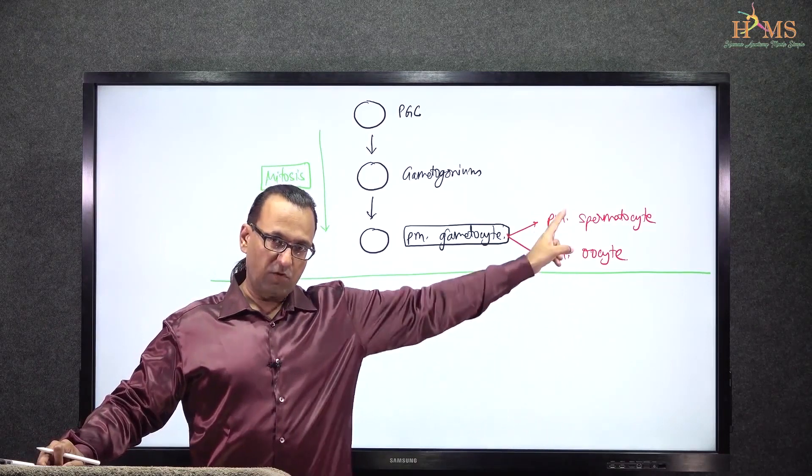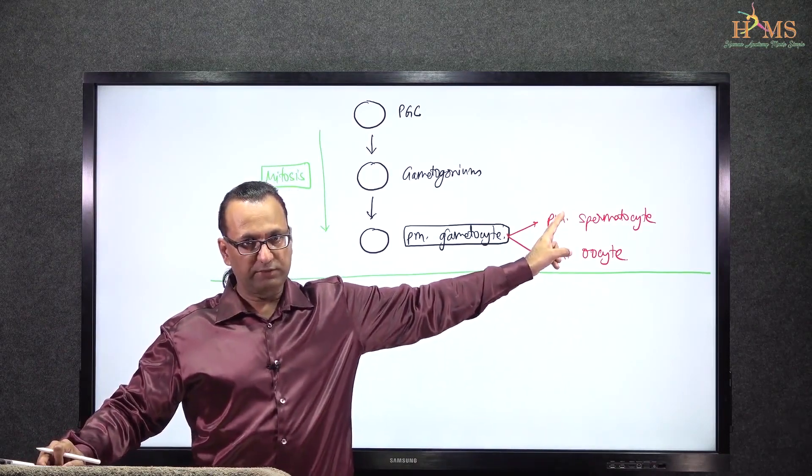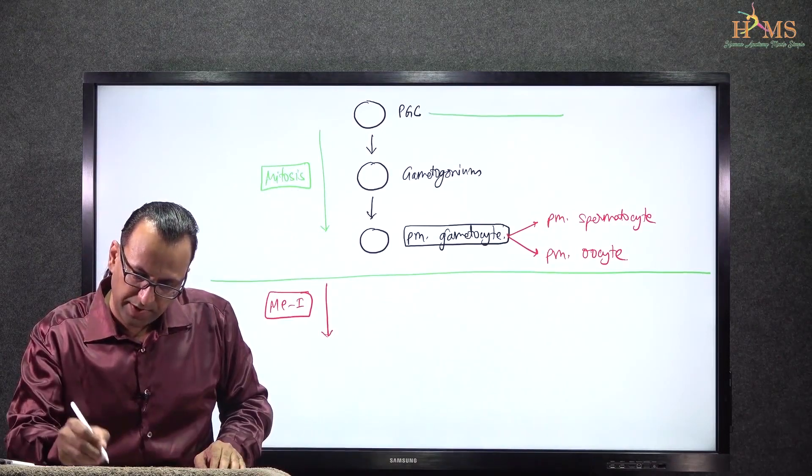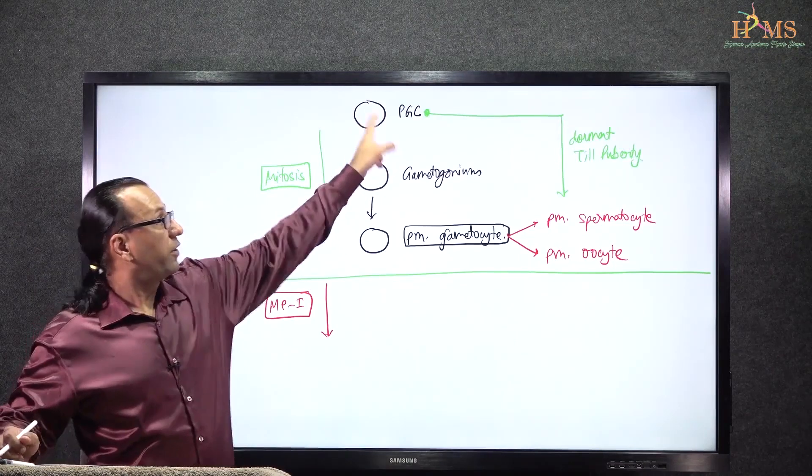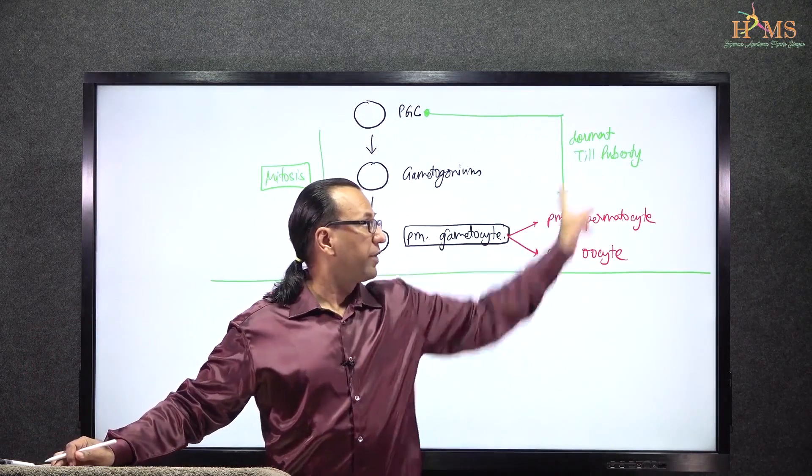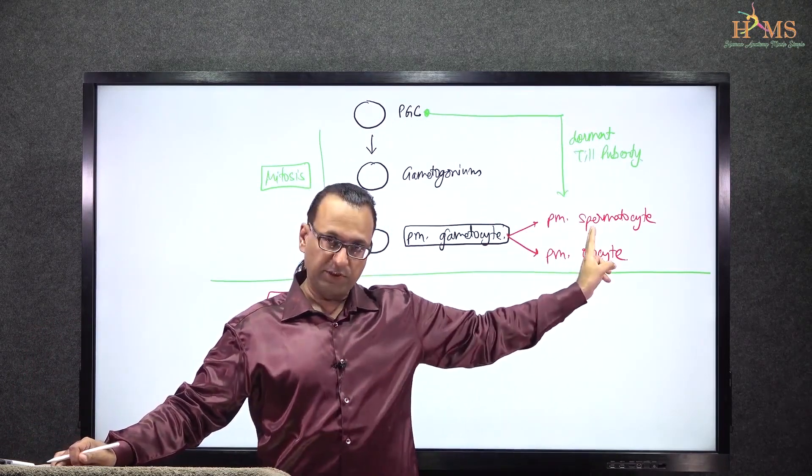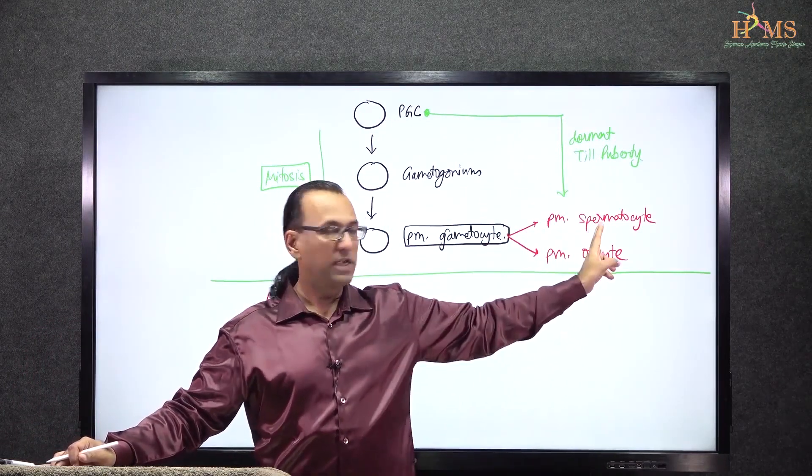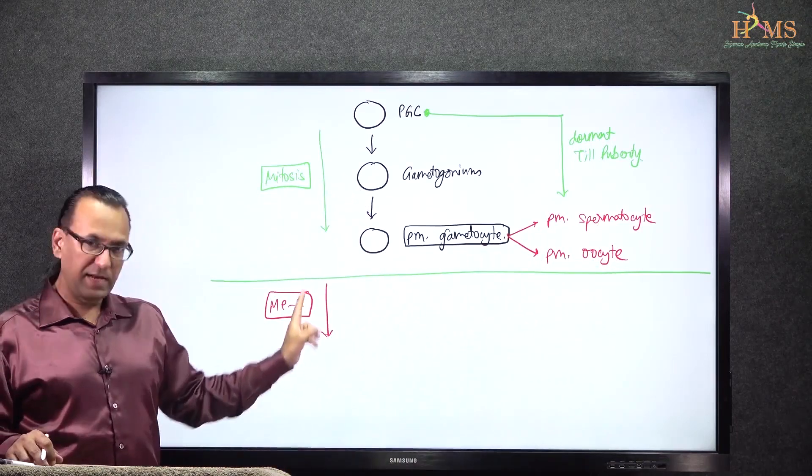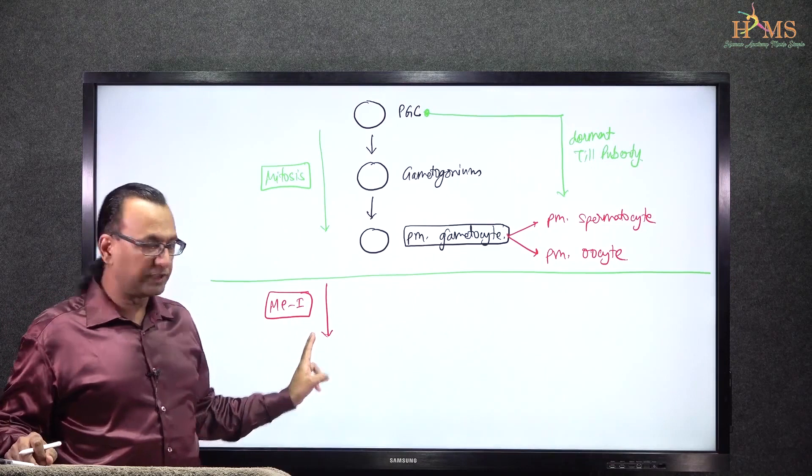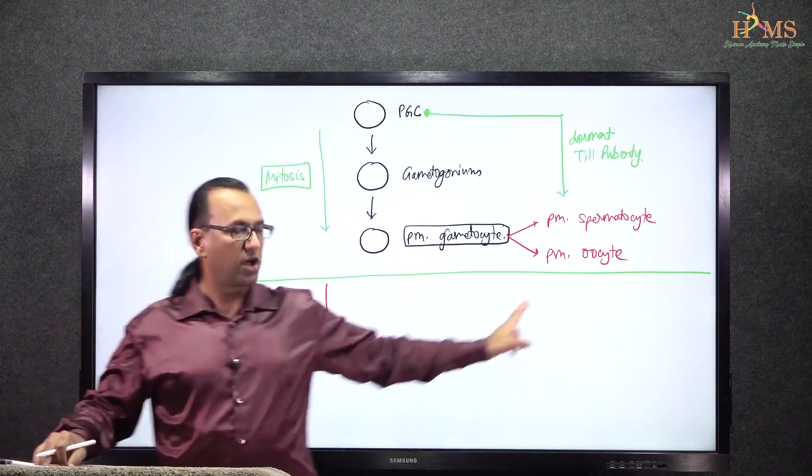Remember, spermatogenesis begins only after puberty is achieved, since the primordial germ cells remain dormant till puberty in males. Primordial germ cells are dormant until puberty, and only after puberty is achieved can you see the primary spermatocyte coming up. That means meiosis in males happens only after puberty is achieved.